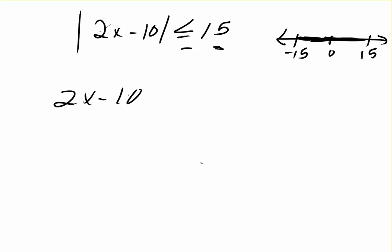But you're going to write this one: 2x minus 10 is less than or equal to 15, right? Less than or equal to 15. And 2x minus 10 is greater than or equal to negative 15. It's greater than or equal to negative 15.